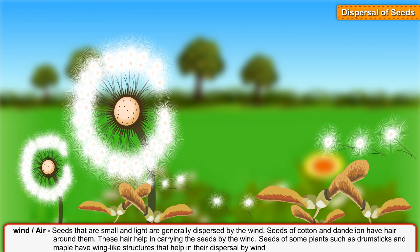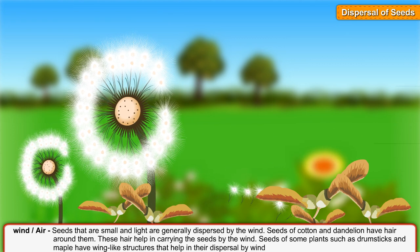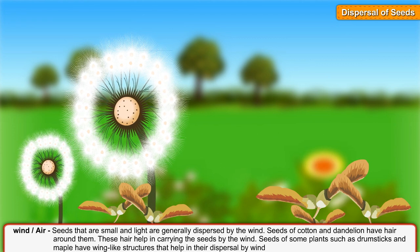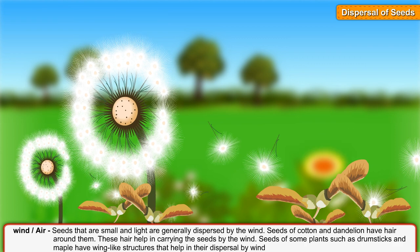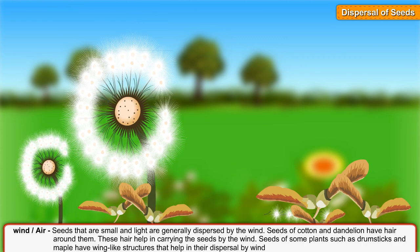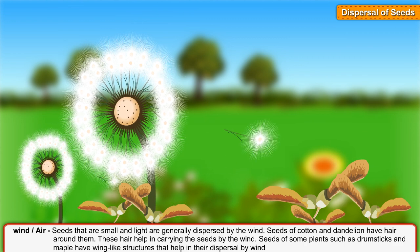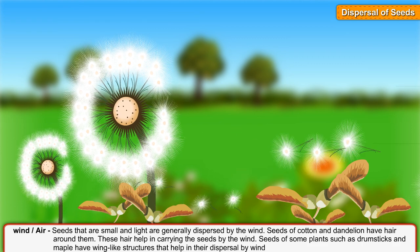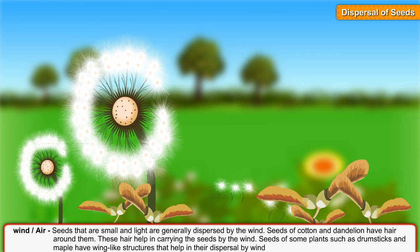Seeds of some plants such as drumsticks and maple have wing-like structures that help in their dispersal by wind.